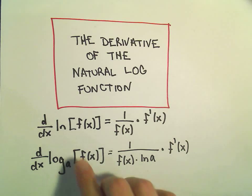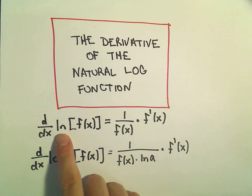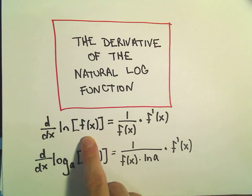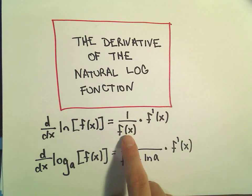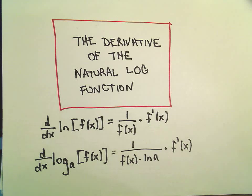So the two basic formulas you need to remember: the derivative of ln of a function f(x), when we take the derivative of that we just get 1 over f(x) times f prime of x.